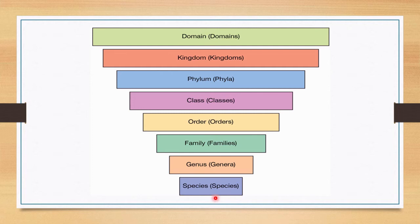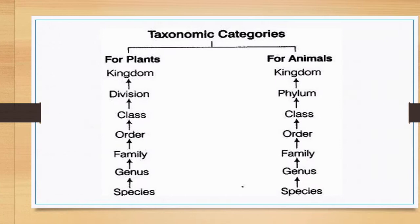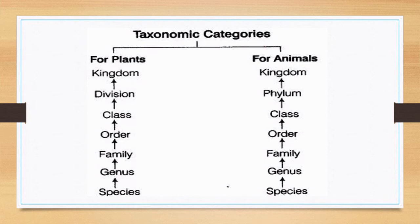To summarize using this diagram: species is the lowest category. All species together form genus, many genera form family, many families form order, many orders form class, many classes form phylum, and many phyla form kingdom. Kingdoms together form domains. As you go upward, the categories become higher, with kingdom or domain being the uppermost category.